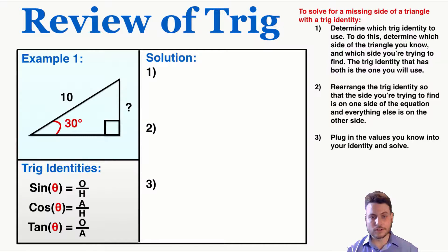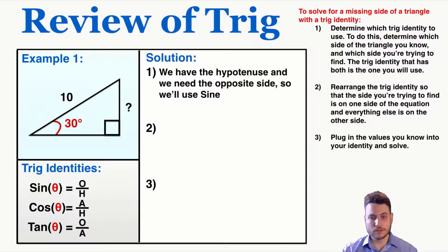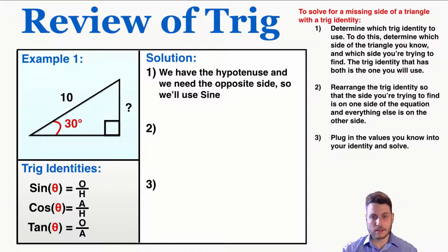Let's look at this first example. I have a triangle with a hypotenuse of 10 and an angle of 30 degrees, and I'm trying to find that missing side on the right. Step one: determine which trig identity to use by identifying which side you know and which side you're trying to find. Here I have the hypotenuse and need the opposite side, and the only identity that connects opposite and hypotenuse is sine, so we'll use sine.